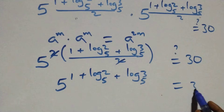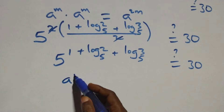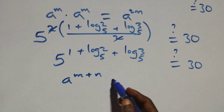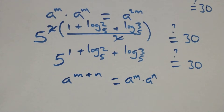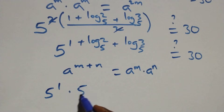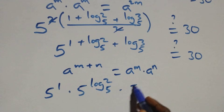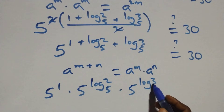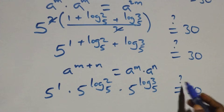This equals 30 on this side. This follows the law of indices: when we have a raised to power (m + n), this is the same as a^m times a^n. So we have 5 raised to power 1, times 5 raised to power log₅2, times 5 raised to power log₅3, equals 30.